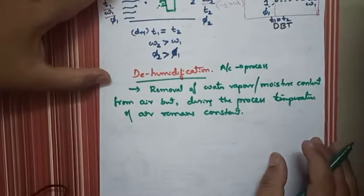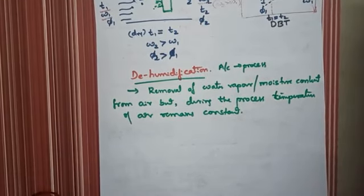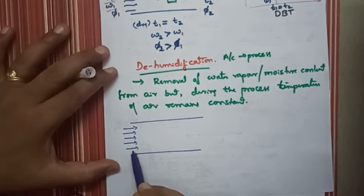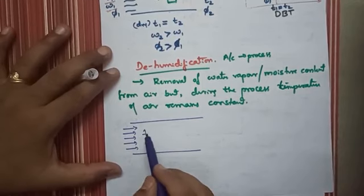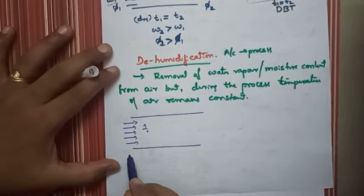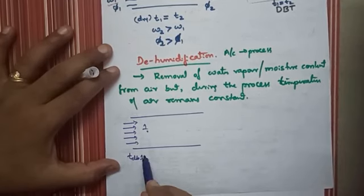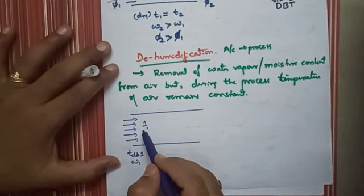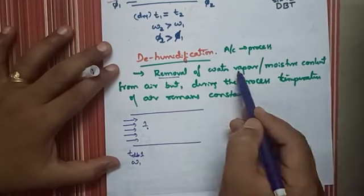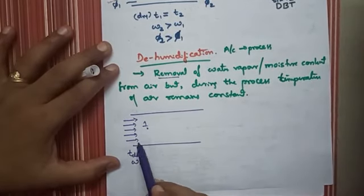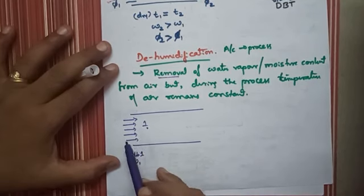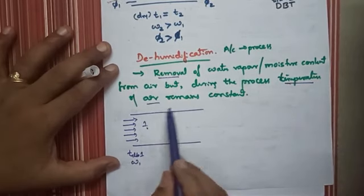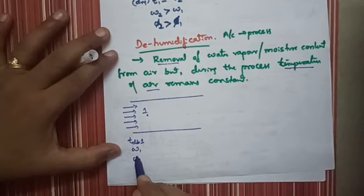To understand dehumidification, consider a pipe through which air is supplied. At point number one (inlet), the dry bulb temperature is Tb1, the moisture content is omega 1 — here the moisture content is more and we need to remove it. The relative humidity at point one is phi 1. This process of removing water vapor or moisture content from the air is called dehumidification, and the temperature must remain constant.